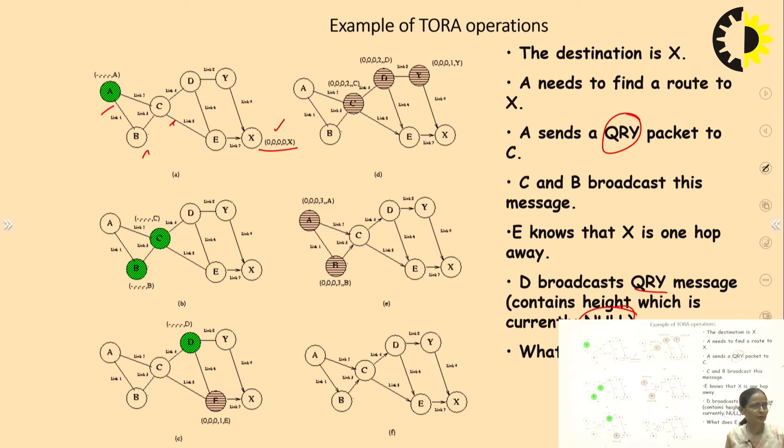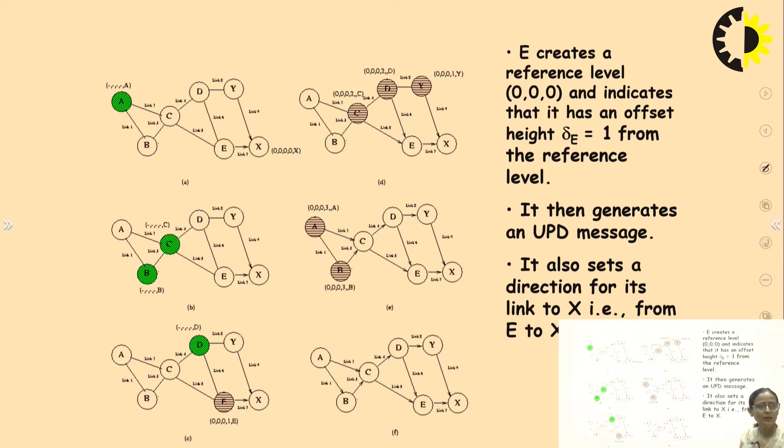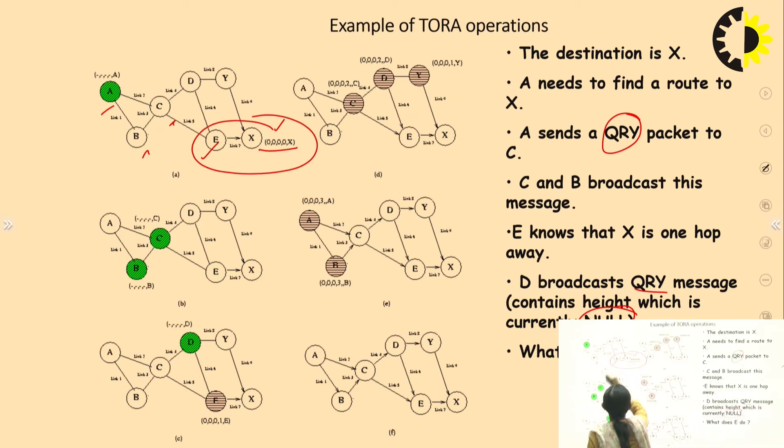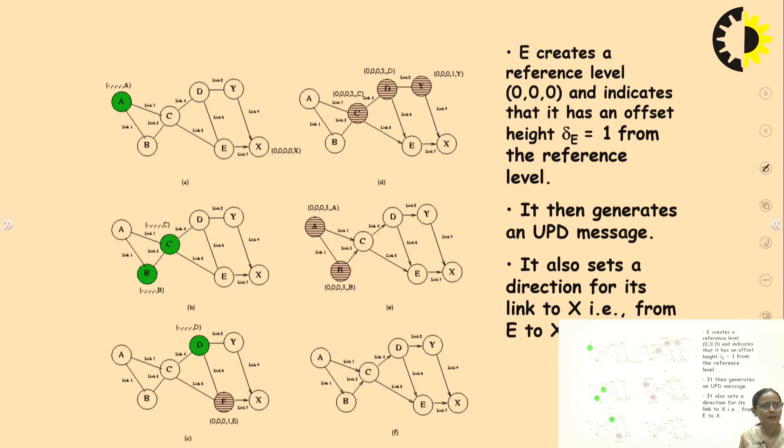Once E receives the information, E creates a reference level 0,0,0 and indicates that it has an offset δE equals 1 from the reference level. It will set these three parameters as 0,0,0. But this last parameter, the reference level, it increments it to 1. Now it will generate an UPD message. It also sets a direction for its link to X, that is from E to X.